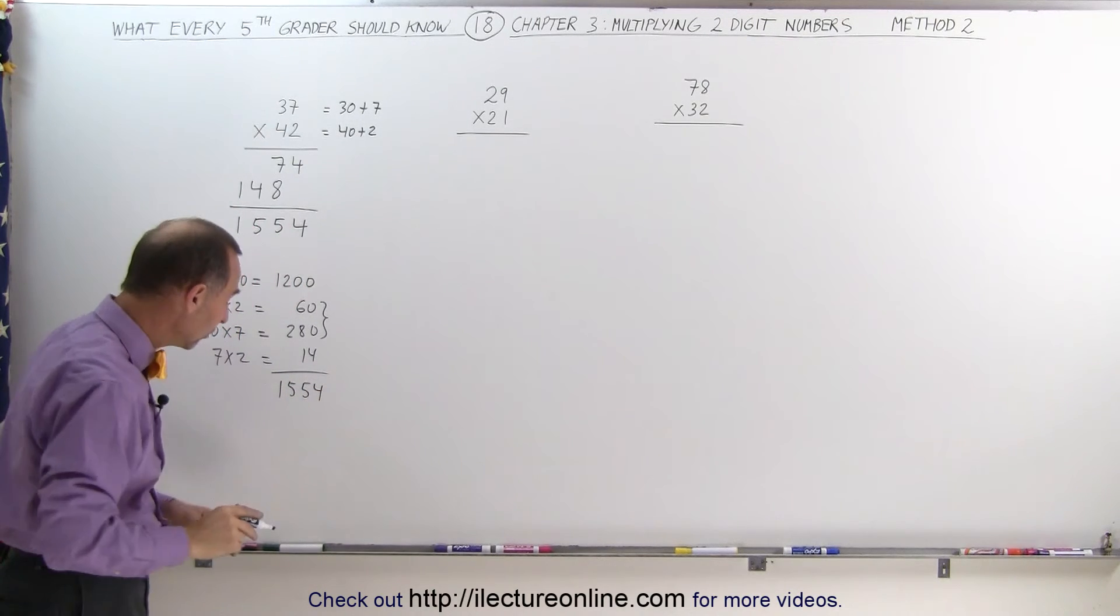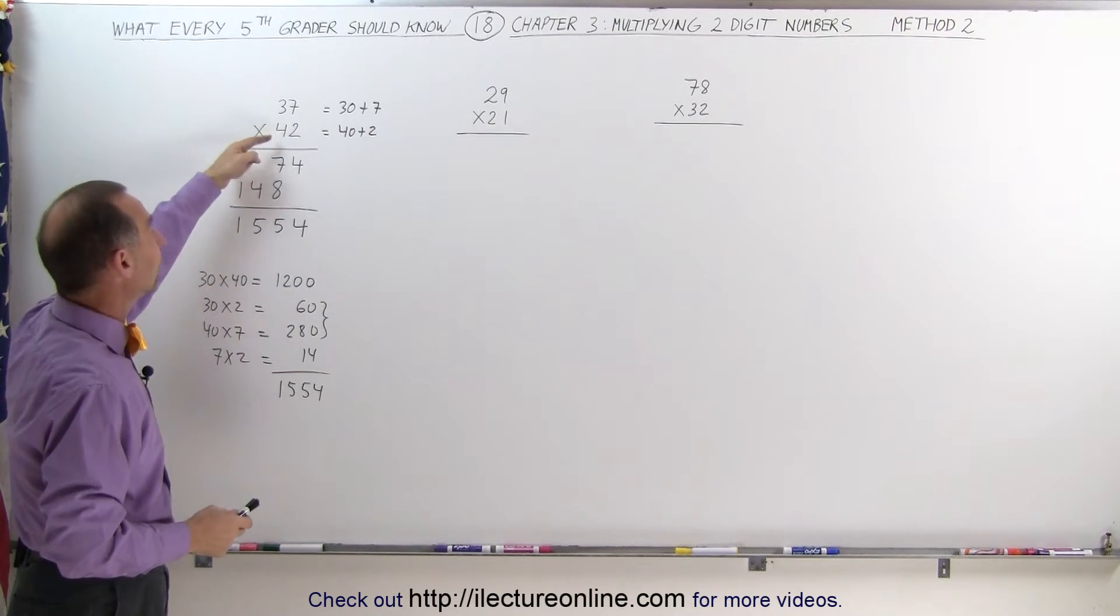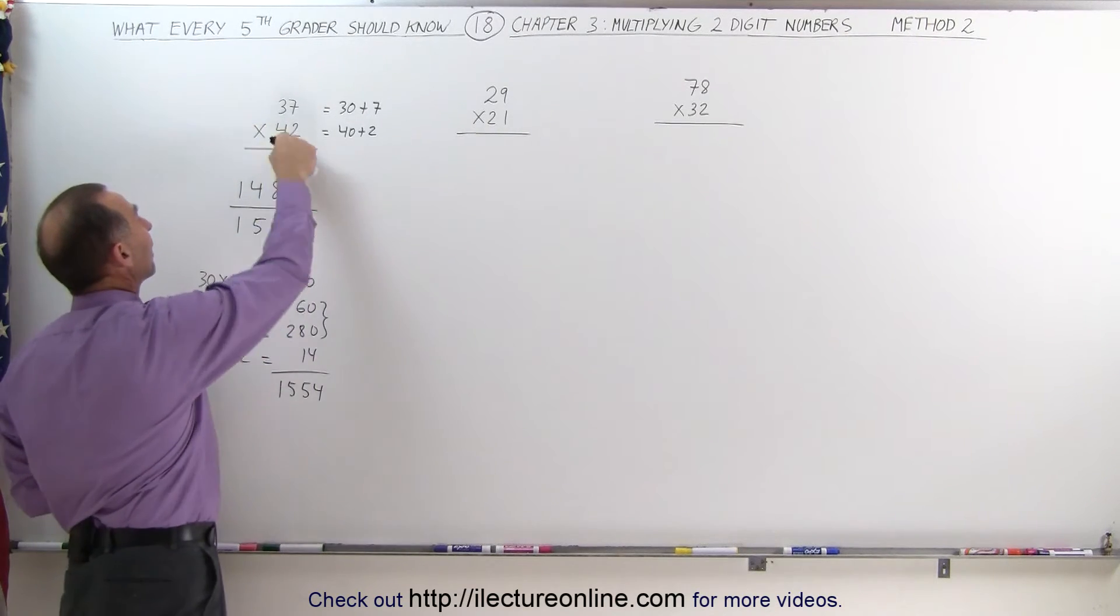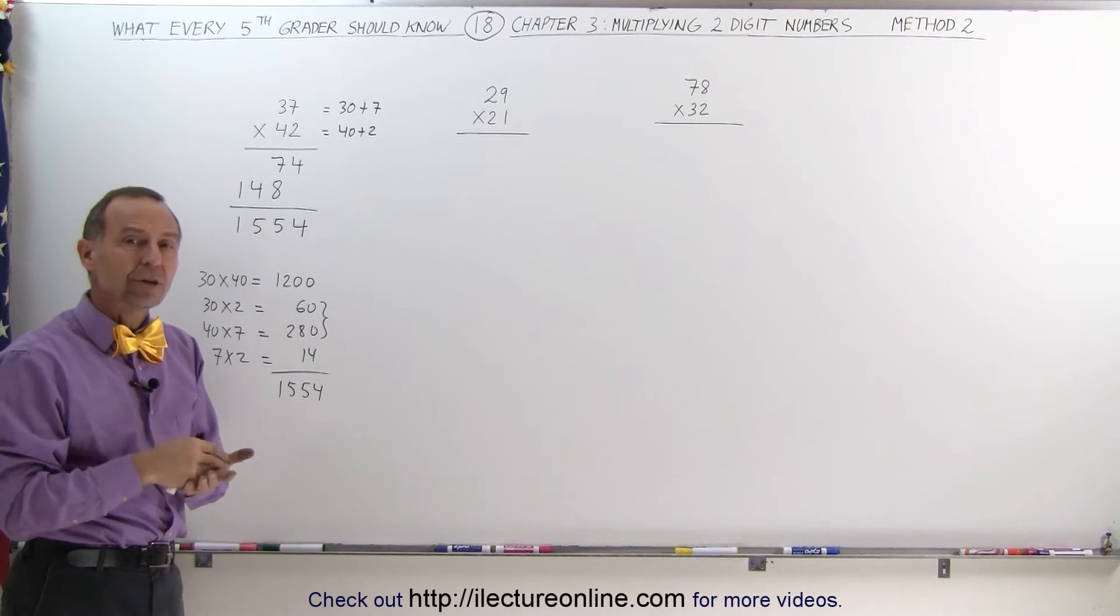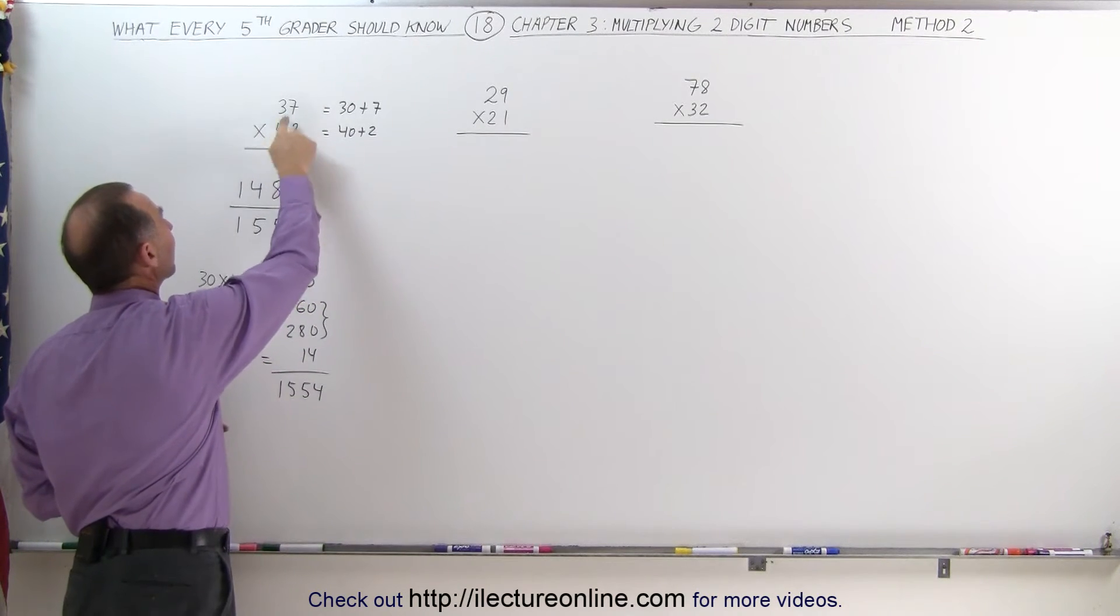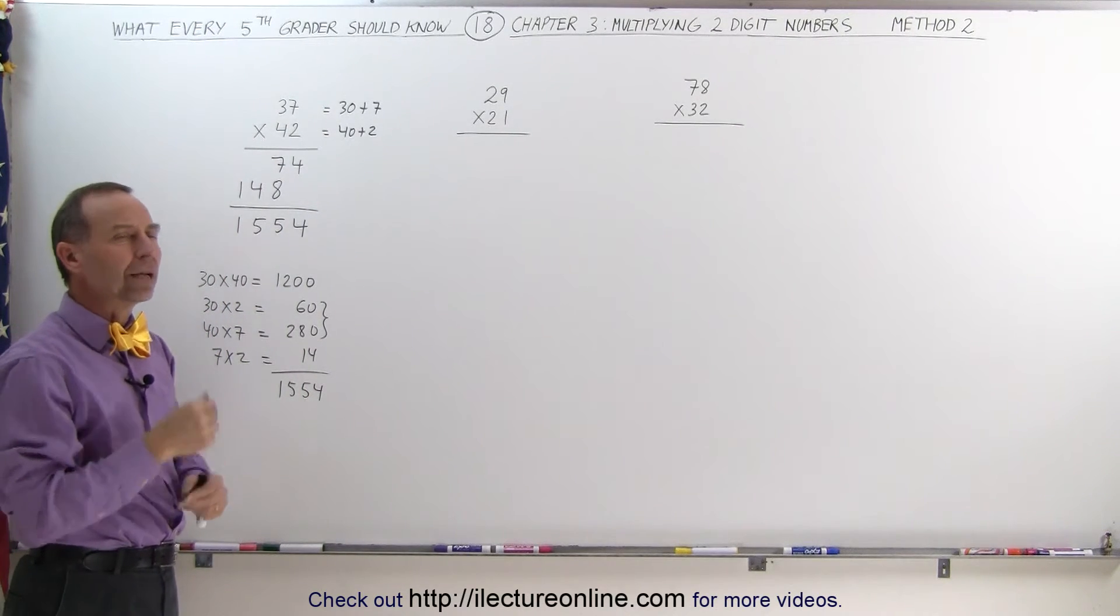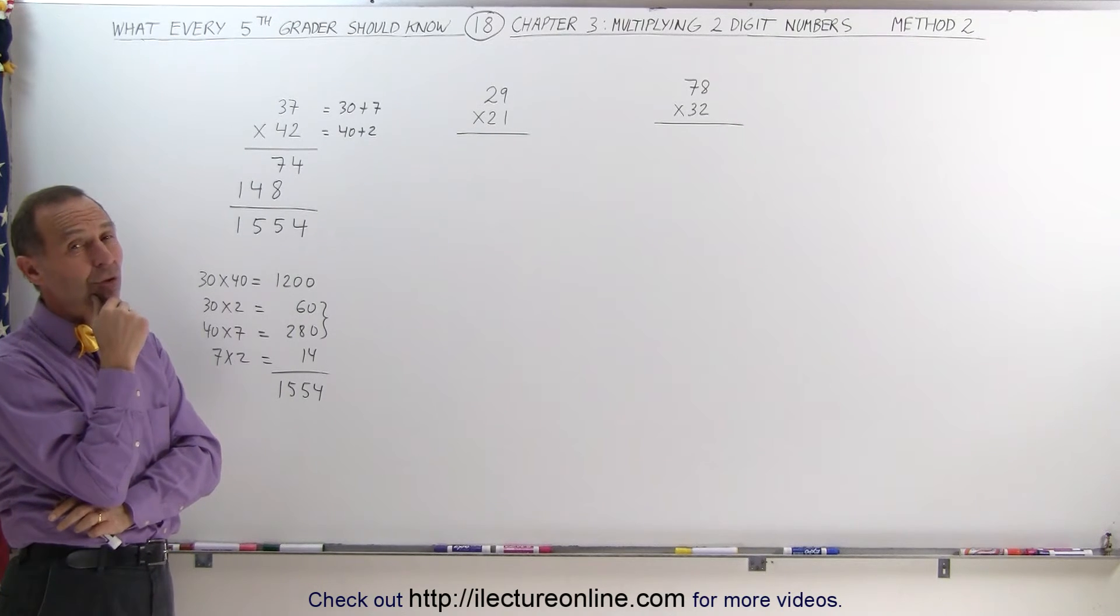And with a little bit of practice you can actually do that in your head. You go 30 times 40, that's 1200. Remember 1200. 30 times 2 is 60, 1200 plus 60 is 1260. Then 40 times 7 is 280. 1260 plus 280. Now you say, well that could be pretty difficult to do in your head.